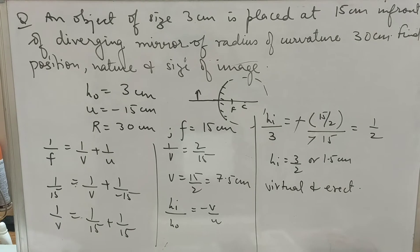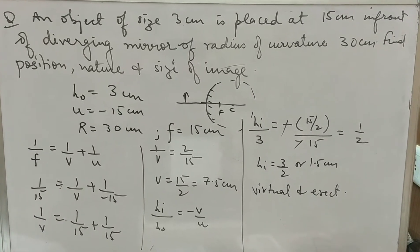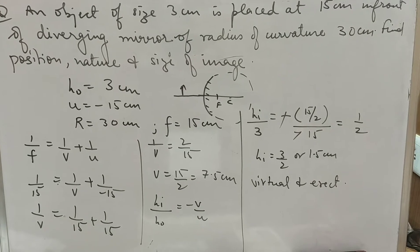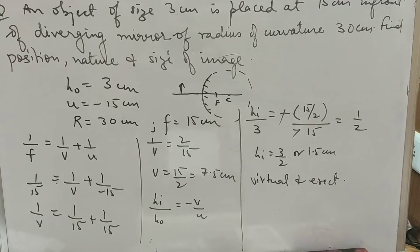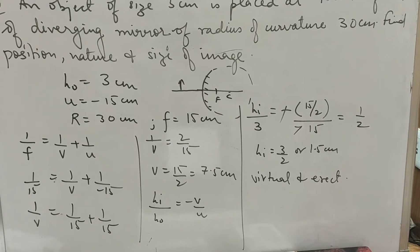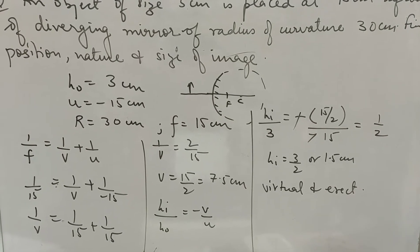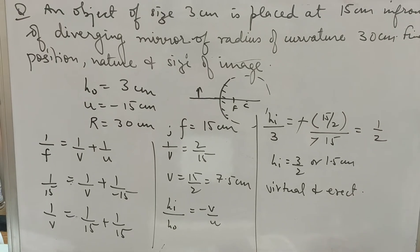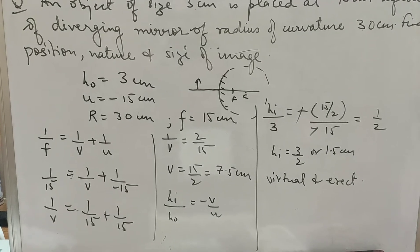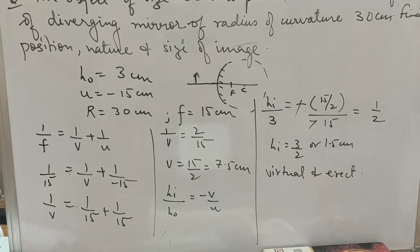Next problem: object placed 15 cm in front of a diverging mirror, radius of curvature 30 cm, object height HO = 3 cm. Find position, nature, and size of image. Diverging mirror means convex. Object distance u = minus 15, radius of curvature 30 cm gives focal length f = plus 15 cm.